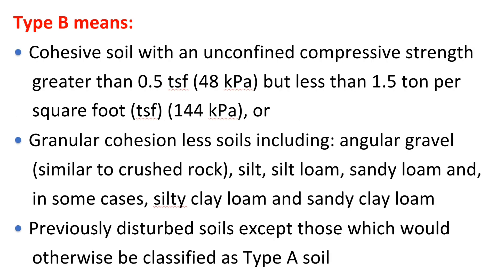Type B means cohesive soil with an unconfined compressive strength greater than 0.5 TSF (48 kilopascals) but less than 1.5 tonne per square foot (TSF), 144 kilopascals; or granular cohesion-less soils including angular gravel similar to crushed rock, silt, silt loam, sandy loam, and in some cases silty clay loam and sandy clay loam. Previously disturbed soils, except those which would otherwise be classified as Type A soil.